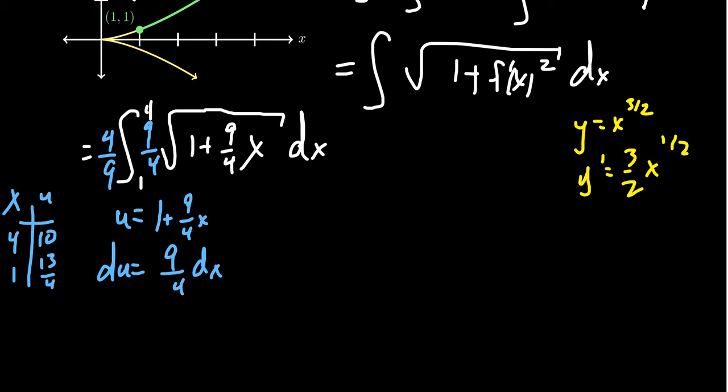So then our integral becomes 4 ninths, the integral from 13 fourths to 10. And then we're going to get the square root of u, or that is u to the 1 half power, du. So we get this, which is not so bad as a function to find its antiderivative.